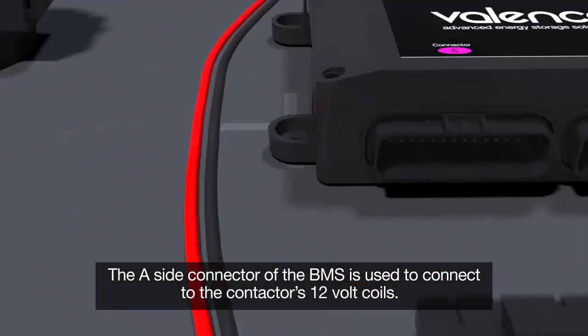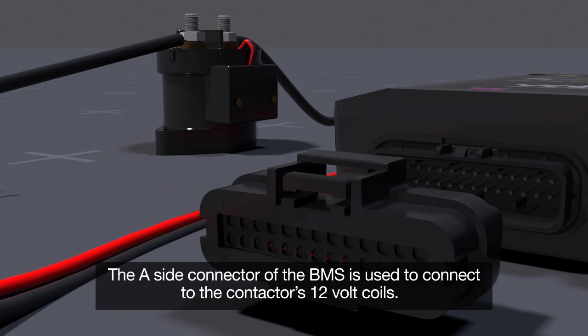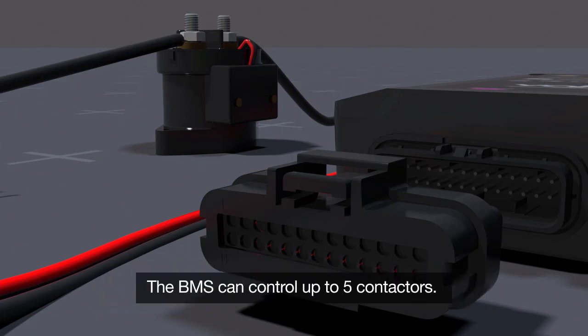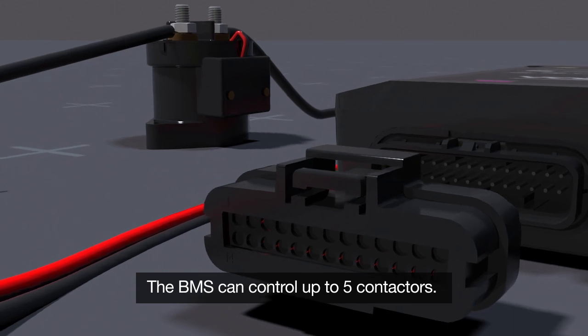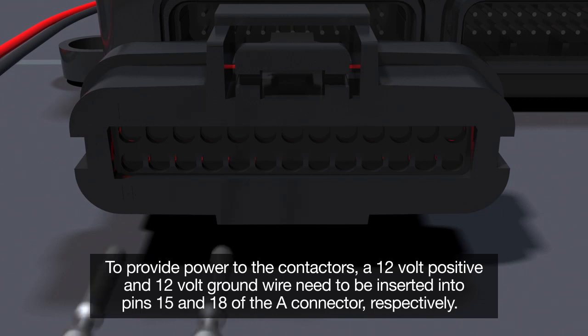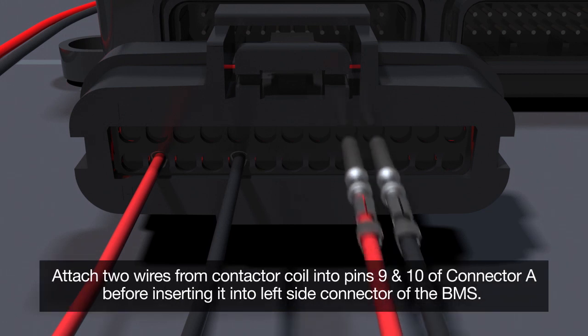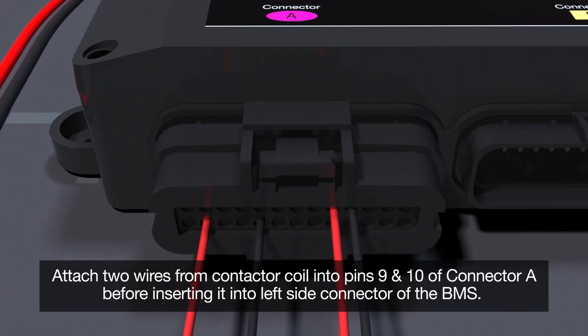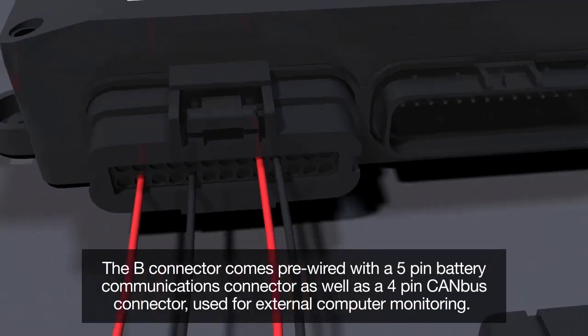The A side connector of the BMS is used to connect to the contactors 12 volt coils. The BMS can control up to five contactors. To provide power to the contactors a 12 volt positive and 12 volt ground wire need to be inserted into pins 15 and 18 of the A connector respectively. Attach two wires from the contactor coil into pins 9 and 10 of connector A before inserting it into the left side connector of the BMS.